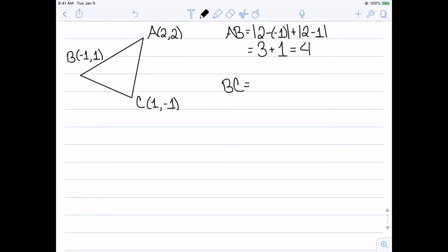Next, let's consider the distance between b and c. The formula for the metric gives me the absolute value of negative 1 minus 1 plus the absolute value of 1 minus negative 1. And simplifying this gives me 2 plus 2, which is equal to 4.